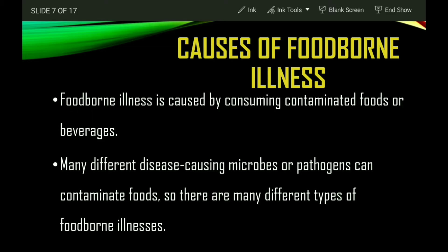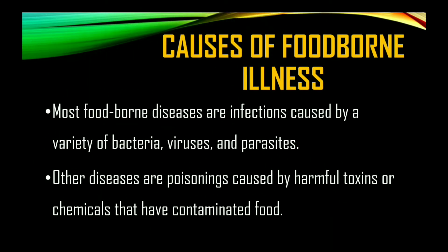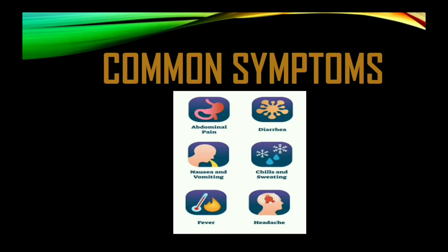Foodborne illnesses are caused by consuming contaminated foods or beverages. Many different disease-causing microbes or pathogens can contaminate food, so there are many different types of foodborne illnesses. Most foodborne diseases are infections caused by a variety of bacteria, viruses, and parasites. Other diseases are poisonings caused by harmful toxins or chemicals that have contaminated food. When persons eat this contaminated food, they become sick, and the sickness is known as foodborne illness or foodborne disease.